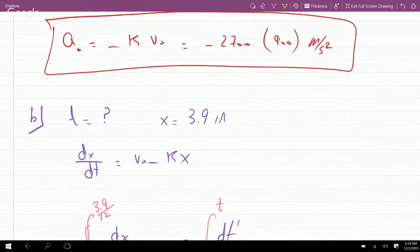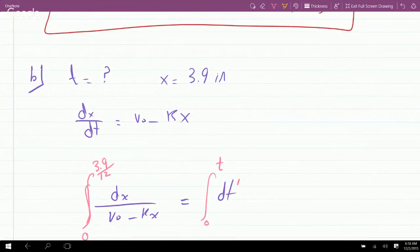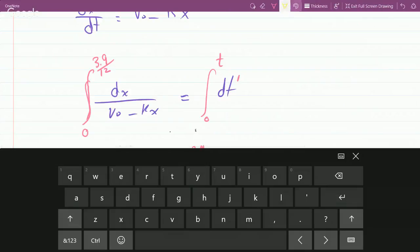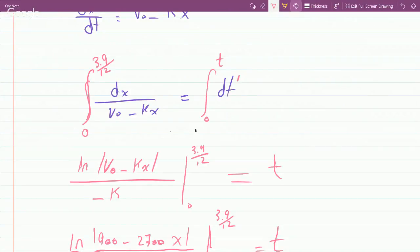So we get this for the a₀ in meters per second squared. The second question asked for time so that the projectile will penetrate 3.9 inches.